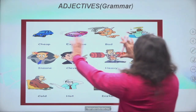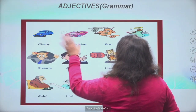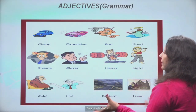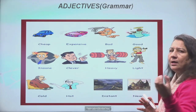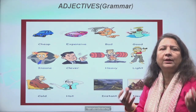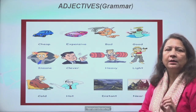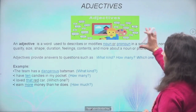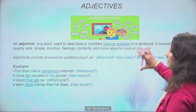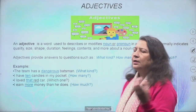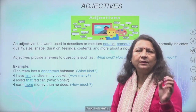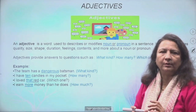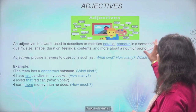Yahan pe jo bhi words likhe hain — cheap, expensive — toh saari kya hain bachon? Adjectives hain, kyunki ye saari jo hain, agar hum sentence mein use karenge, toh hum bhi kya batayenge — modify noun. Kal humne definition discuss ki thi ki what is an adjective: An adjective is a word used to describe or modify a noun or pronoun in a sentence.